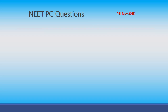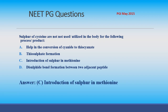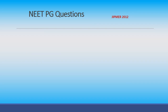PG question (PGI May 2015): Sulfur of cysteine is NOT utilized in the body for which of the following? Options: conversion of cyanide to thiocyanate, thiosulfate formation, introduction of sulfur in methionine, disulfide bond formation between two adjacent peptides. The answer is introduction of sulfur in methionine.